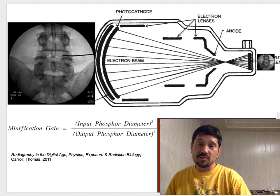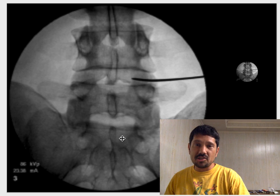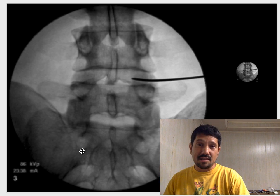Often the output screens are 1-inch in diameter. So here is that initial image that's being imaged onto the input phosphor, and here is that output image.